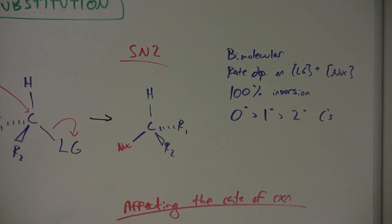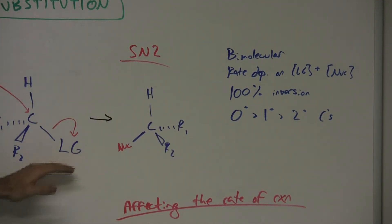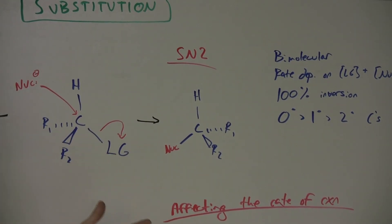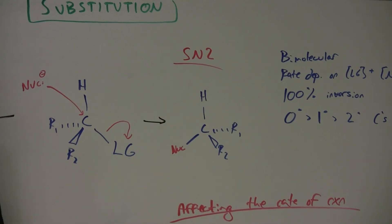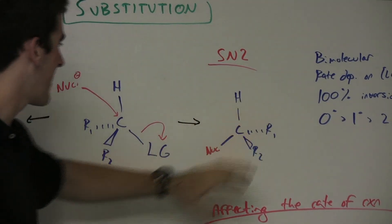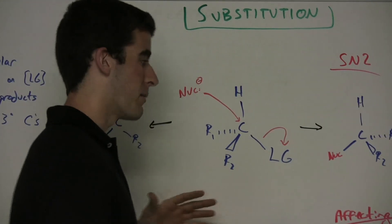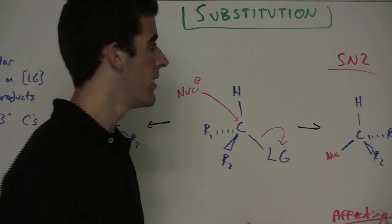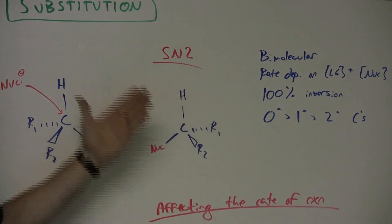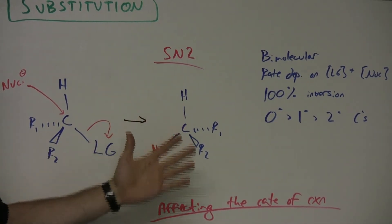Some characteristics of the SN2 reaction: it is bimolecular and the rate is dependent on two things — the leaving group and the nucleophile. There is 100% inversion: the R groups are switched to the other side because the nucleophile coming in needs to be directly behind the leaving group and pushes the R groups to the other side. The carbon type also affects the SN2 rate — a zero (methyl) carbon will be better than primary, which is better than secondary.